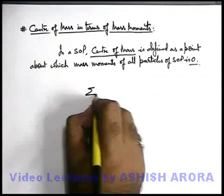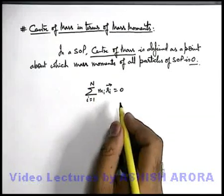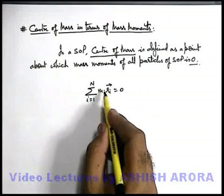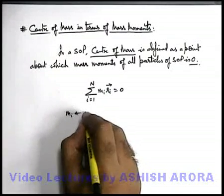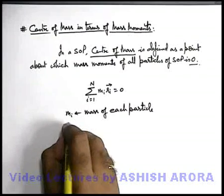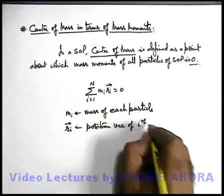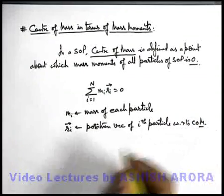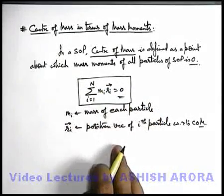We can simply state: for a given system, summation of m_i × r_i vector is equal to zero, for i equal to 1 to n. If in a system of particles there are n particles, correspondingly the masses are m1, m2, m3 up to mn. Here m_i is the mass of each particle, and r_i vector is the position vector of the i-th particle with respect to the centre of mass. That means, with respect to a given centre of mass, if we calculate the mass moment of all the particles, it is equal to zero.